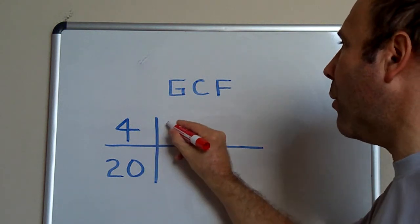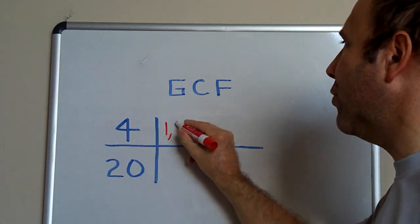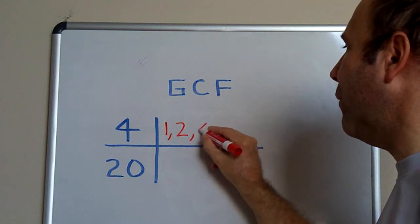So the factors for 4 would be 1, 2, and 4.